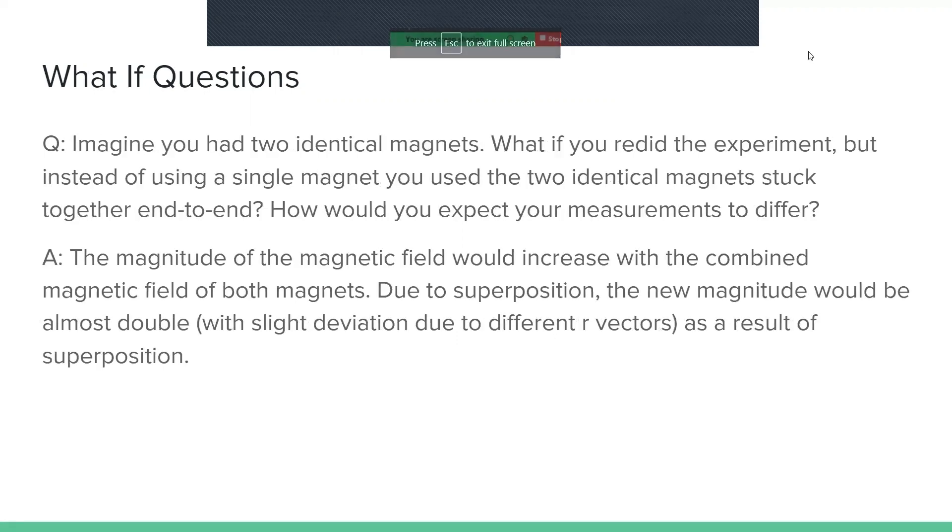Imagine you had two identical magnets. What if you redid the experiment, but instead of using a single magnet, you used the two identical magnets stuck together end-to-end? How would you expect your measurements to differ?